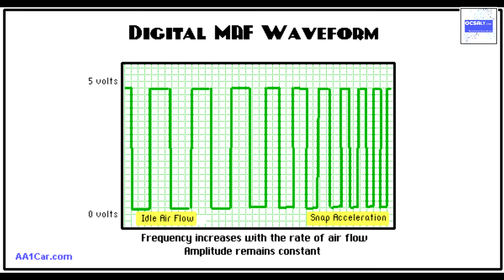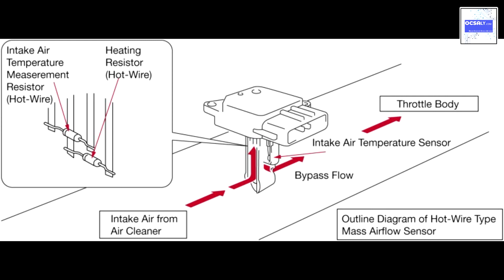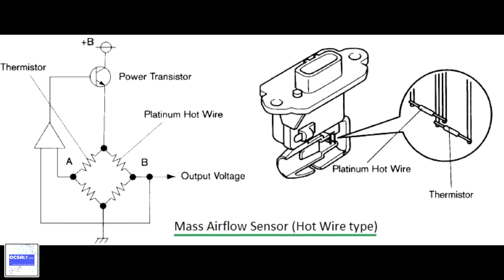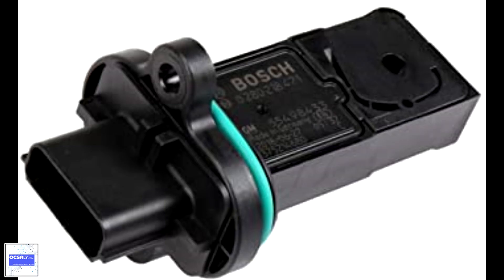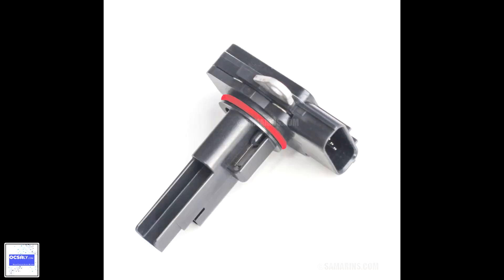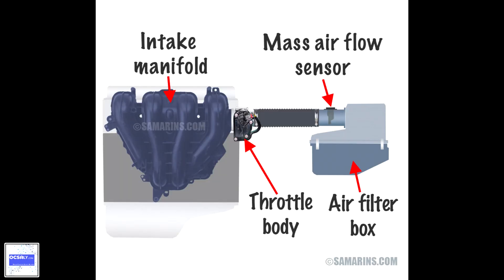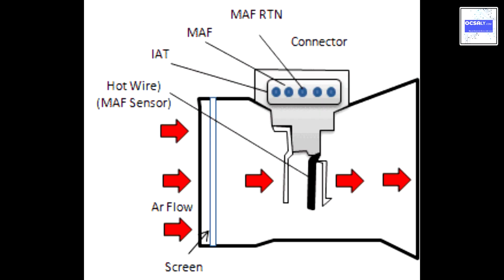A contaminated or failed mass air flow sensor cannot measure the amount of air flow correctly, causing the engine computer to miscalculate the amount of injected fuel. As a result, a bad mass air flow sensor causes various drivability problems, including a no-start, stalling, lack of power and poor acceleration. In addition, a faulty mass air flow sensor might cause the check engine or service engine soon light to come on.